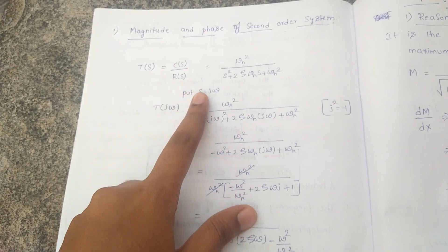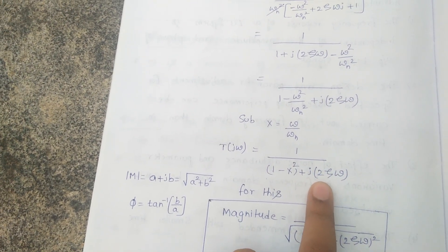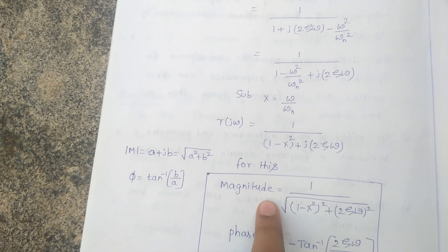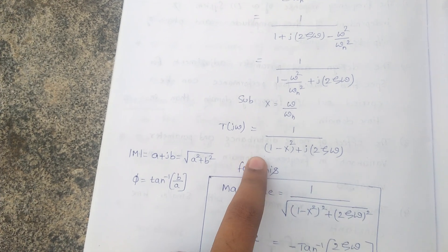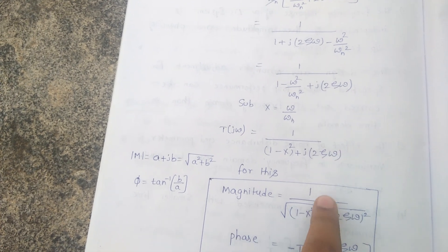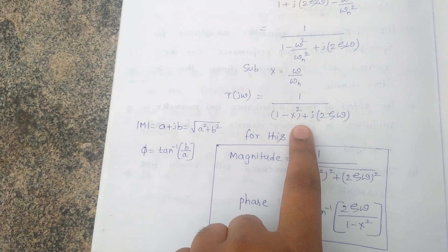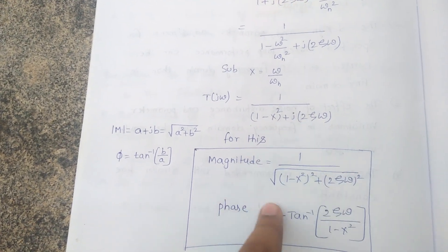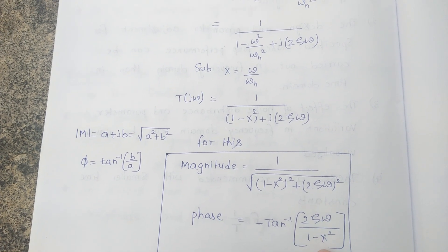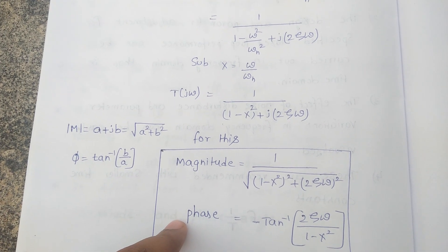Our main aim is to find magnitude and phase. The expression is in the form a + jb (complex form). The magnitude for a complex equation is √(a² + b²), so: Magnitude = 1 / √((1 − h²)² + (2ζh)²). Phase = tan⁻¹(b/a), but since the complex term is in the denominator, Phase = −tan⁻¹(2ζh / (1 − h²)). These are the magnitude and phase equations of second-order systems.